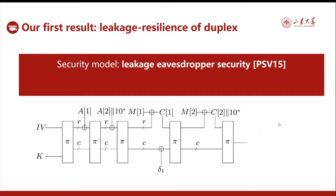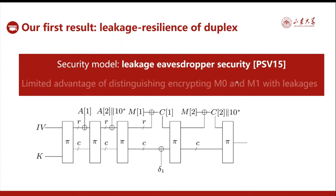Regarding this question, we have our first result: the leakage resilience of the duplex construction. In detail, we consider duplex-based stream cipher or stream encryption, and our security model is the leakage eavesdropper security. It means the advantage of distinguishing encrypting two messages M0 and M1 should be somewhat limited, even if the leakages of the encryptions are given.